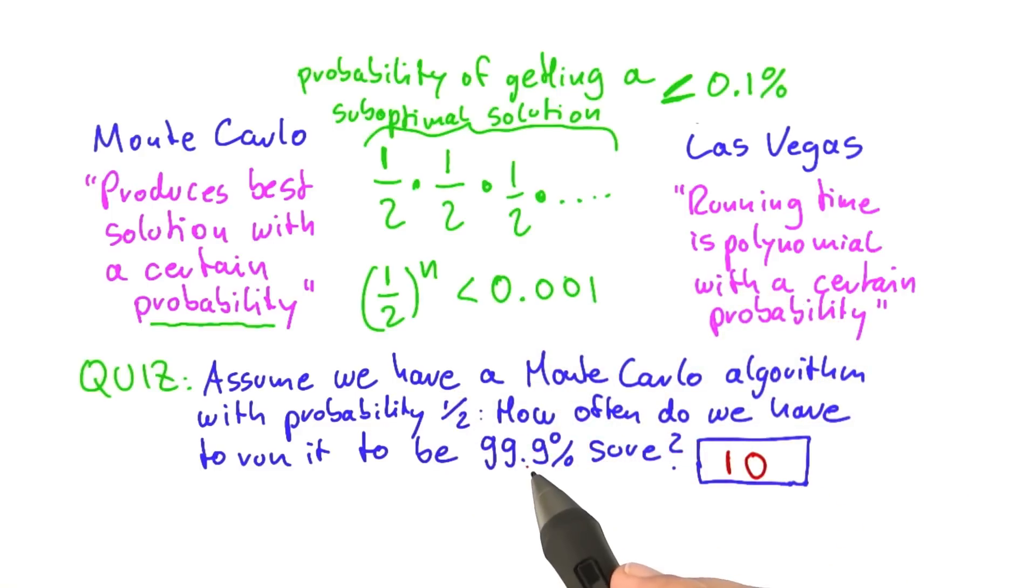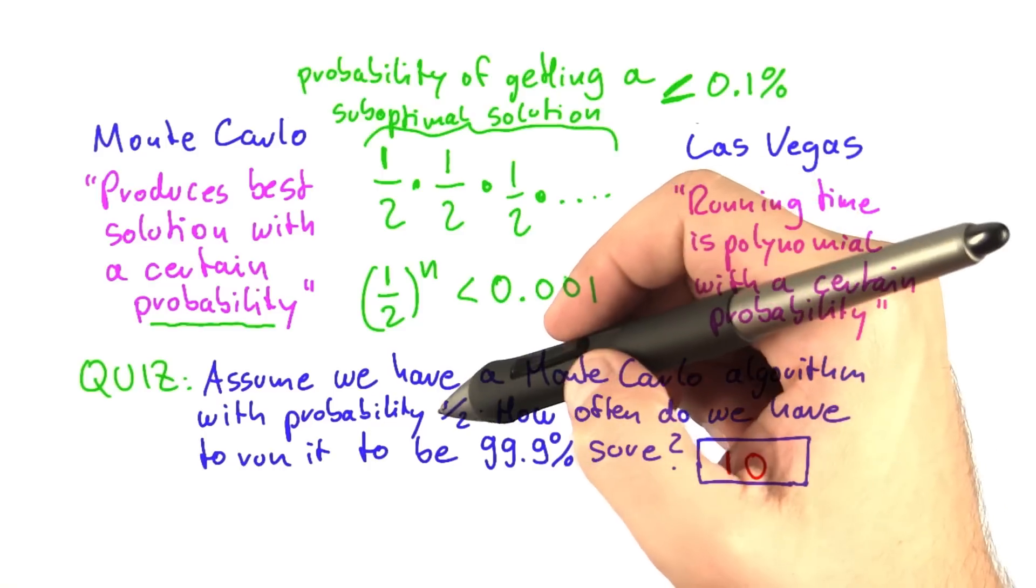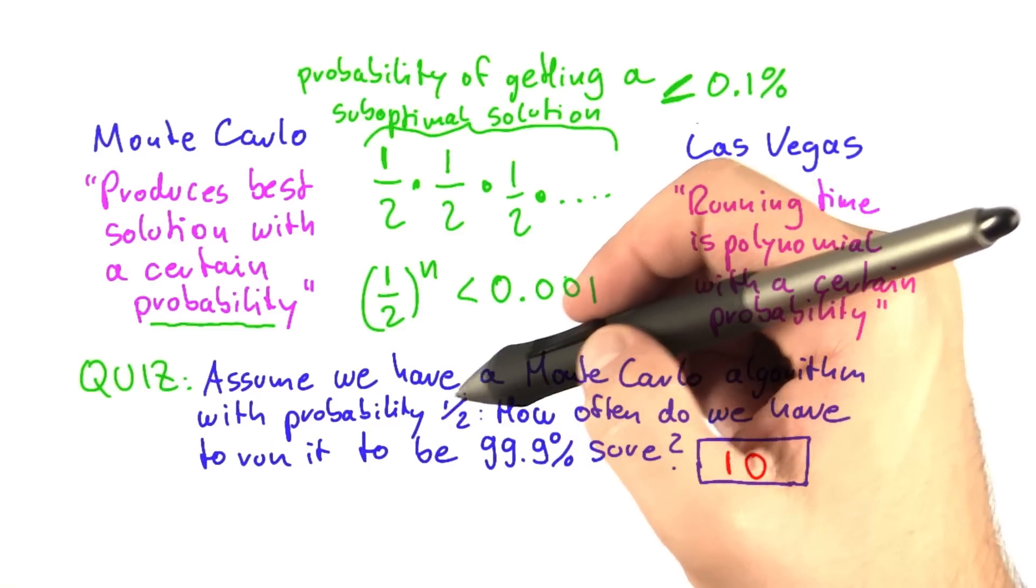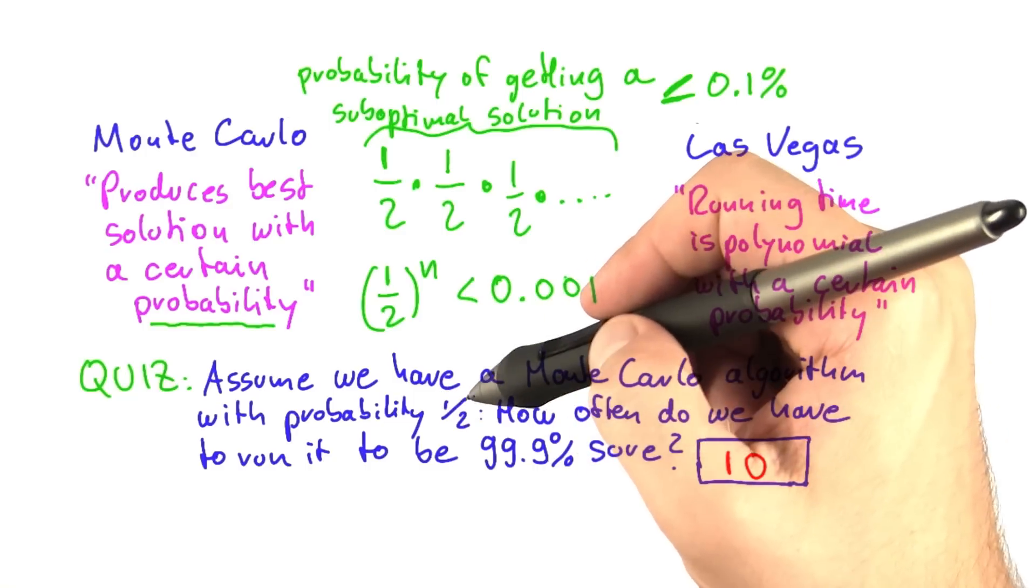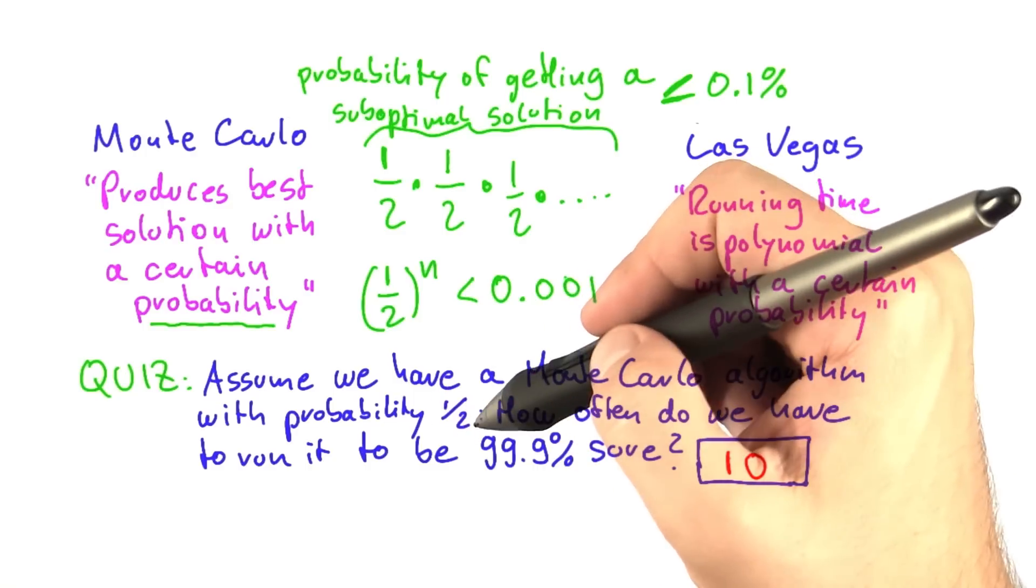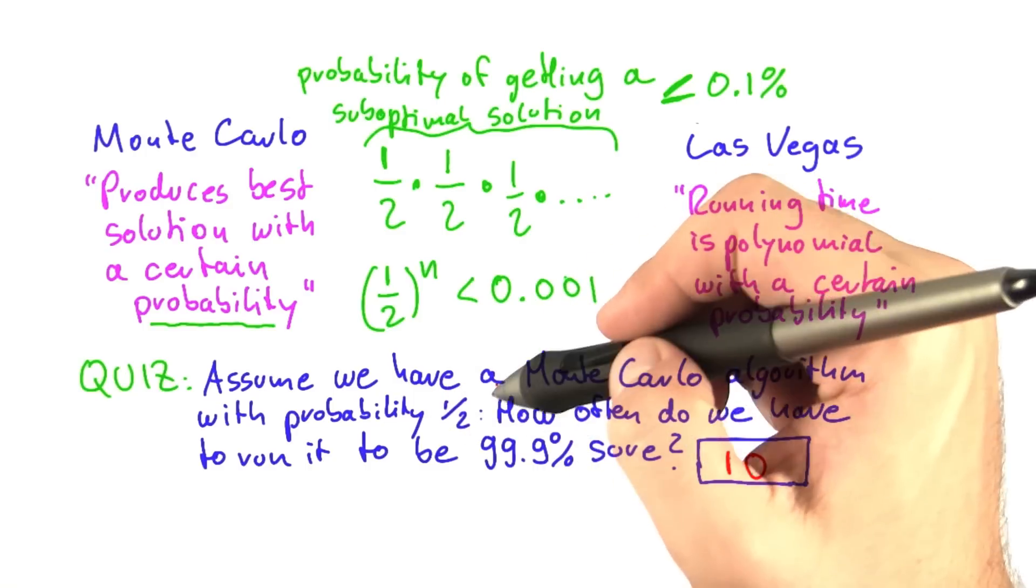Because as you can see, we could very quickly in polynomial time get a solution that is almost guaranteed to be optimal. So what you will find for most Monte Carlo algorithms for challenging problems is that the probability here, first of all, becomes sometimes even exponentially small. And second, that it also depends on the input size. But we'll soon see how that works out concretely.